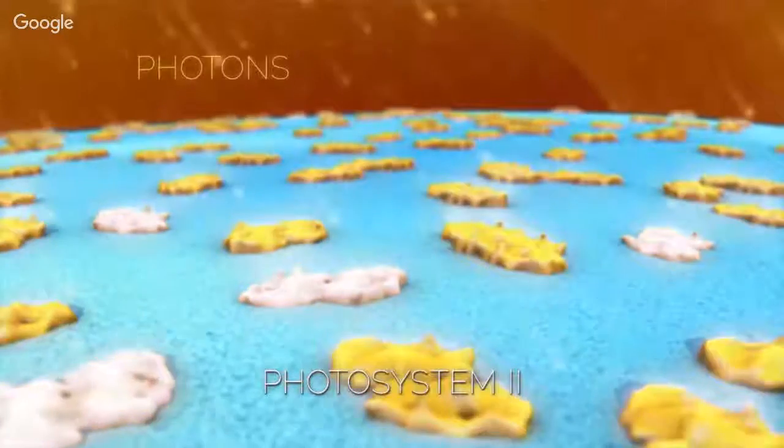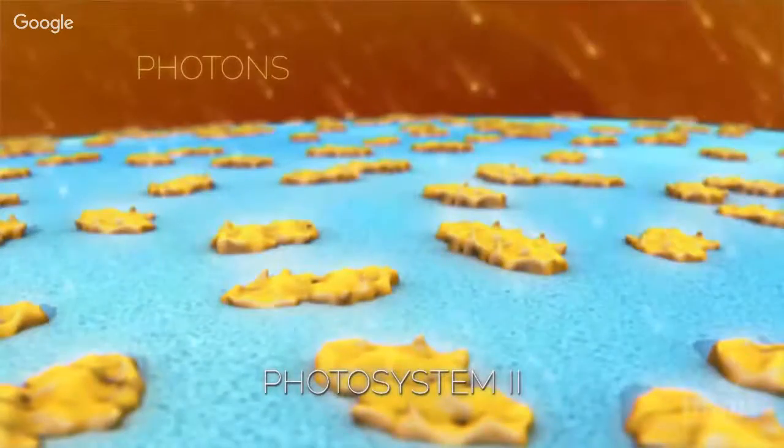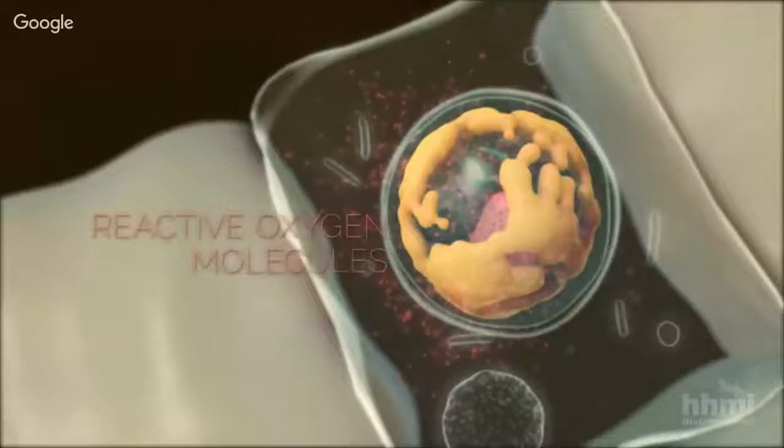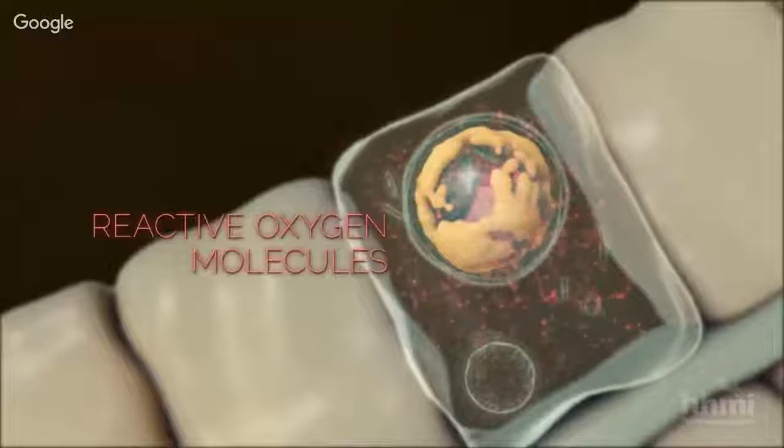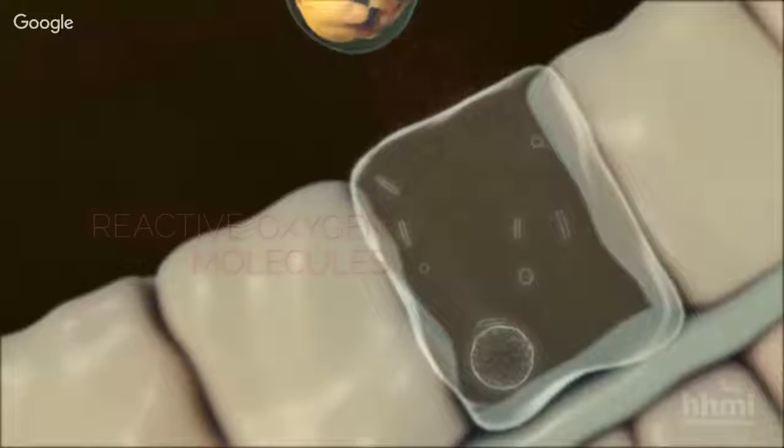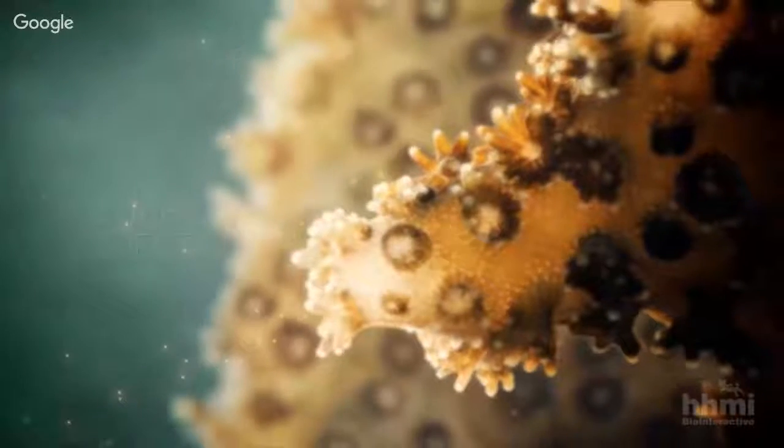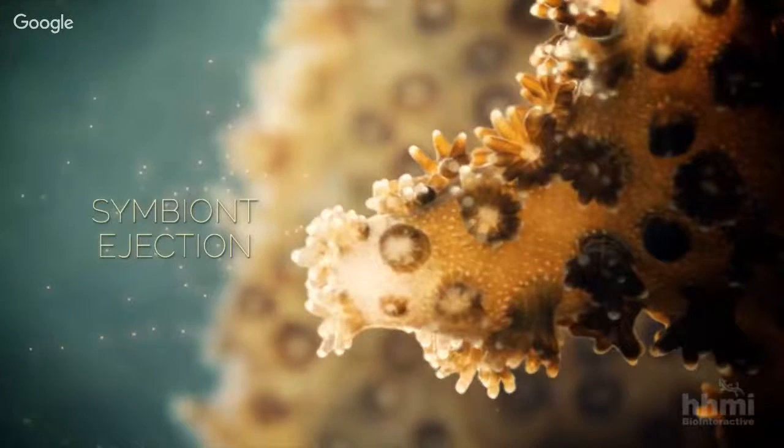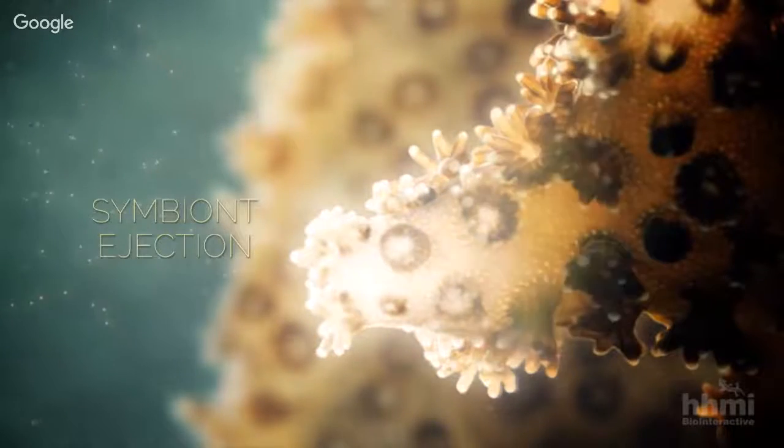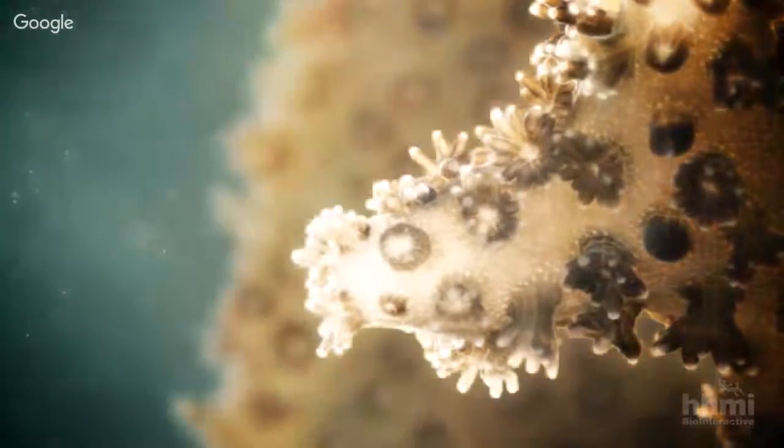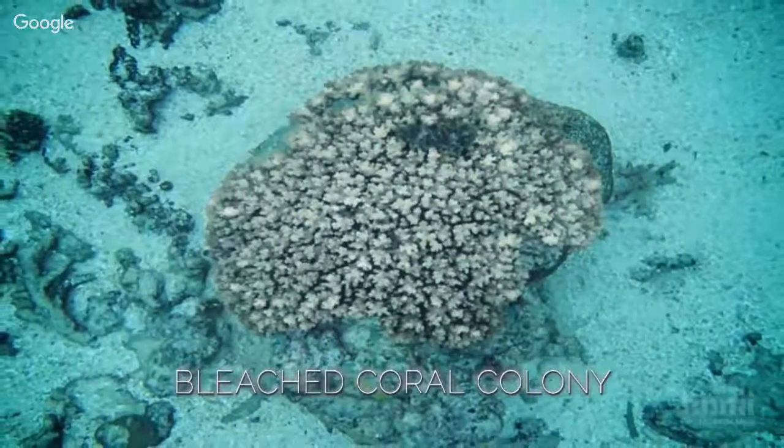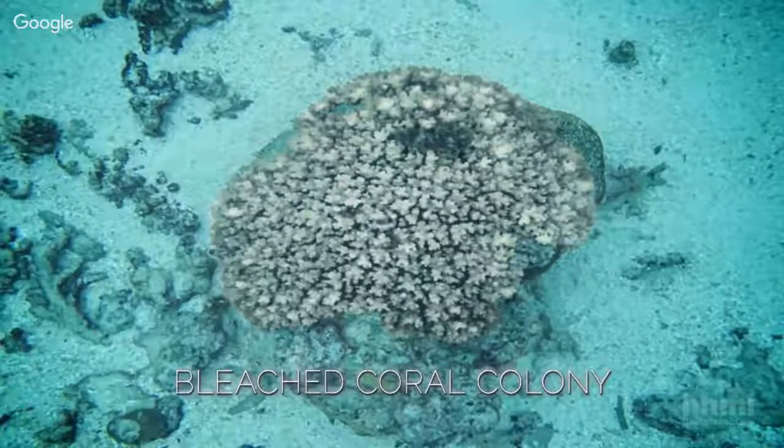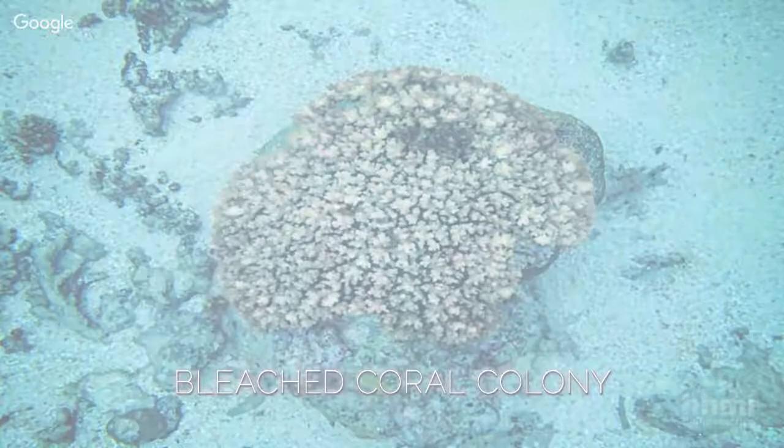Chloroplasts have thylakoid membranes that hold proteins called photosystems. They capture light energy and turn it into chemical energy. If the temperature goes up and the light goes up, they freak out. There's too much energy. The photosystems break and they no longer function properly. The energy is turned into reactive oxygen molecules that damage the cells, both the symbiont and the coral cell, and they spit the symbiont out. If the entire colony does it, then that's coral bleaching. The symbiont provides 75 to 80 percent of the energy the coral needs to survive. Without that energy, it can't make a skeleton and it can't live very long. A lot of the corals that bleach eventually die.